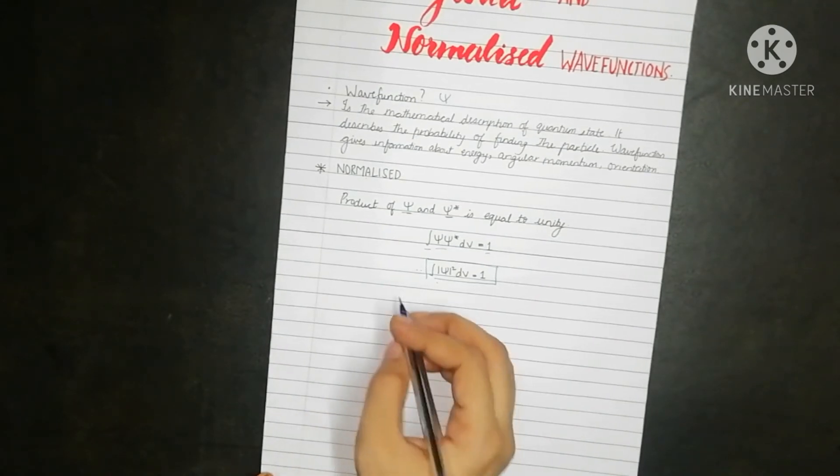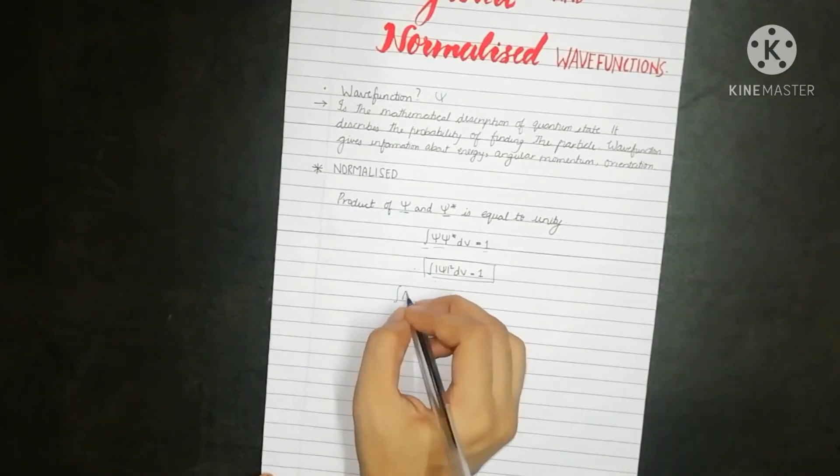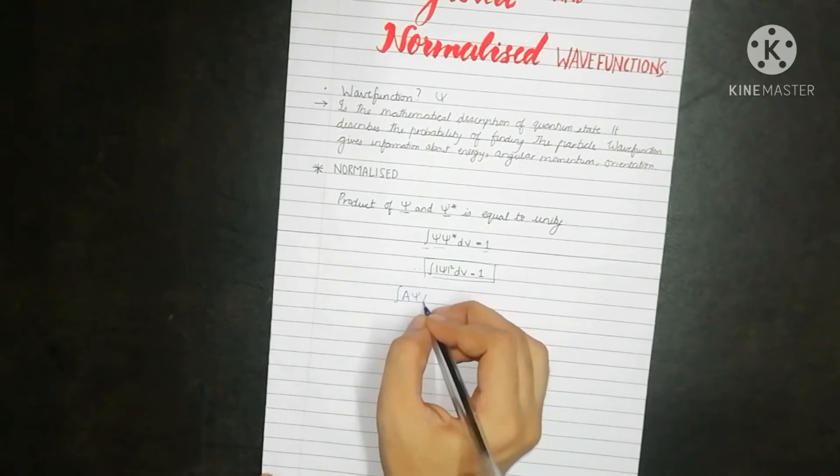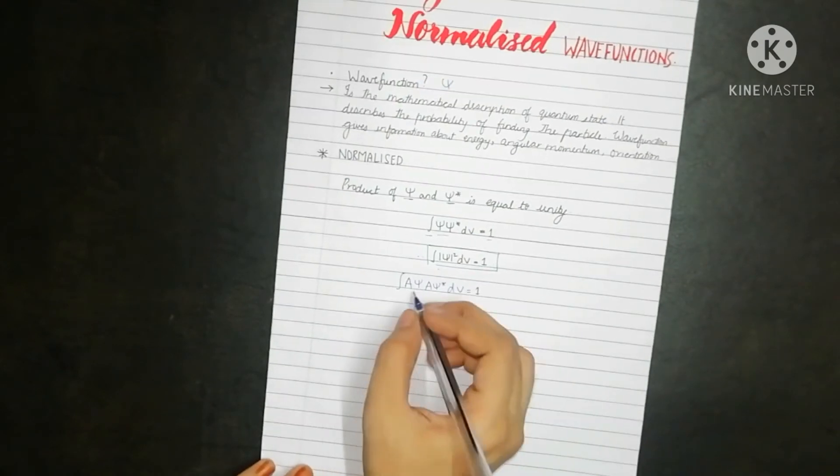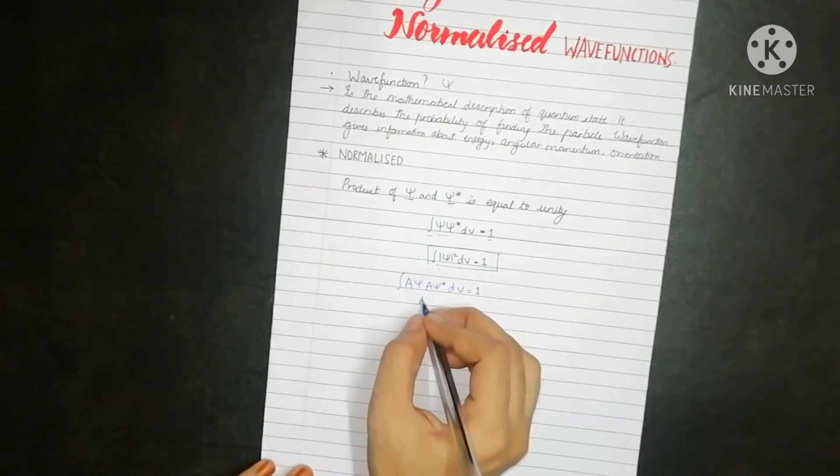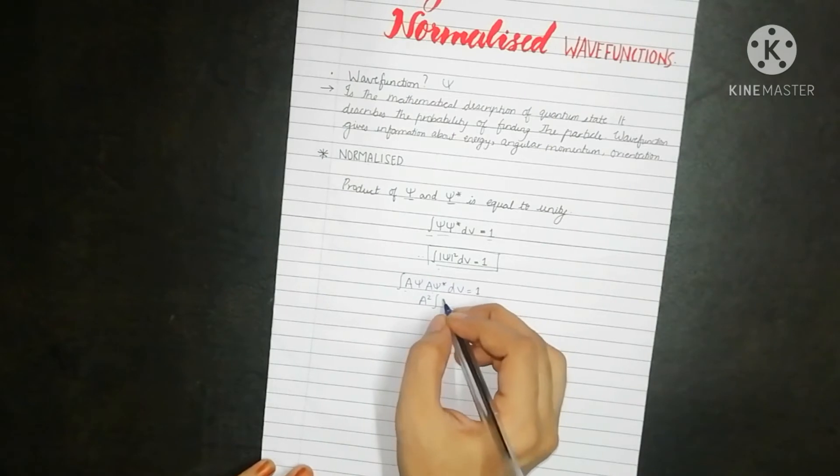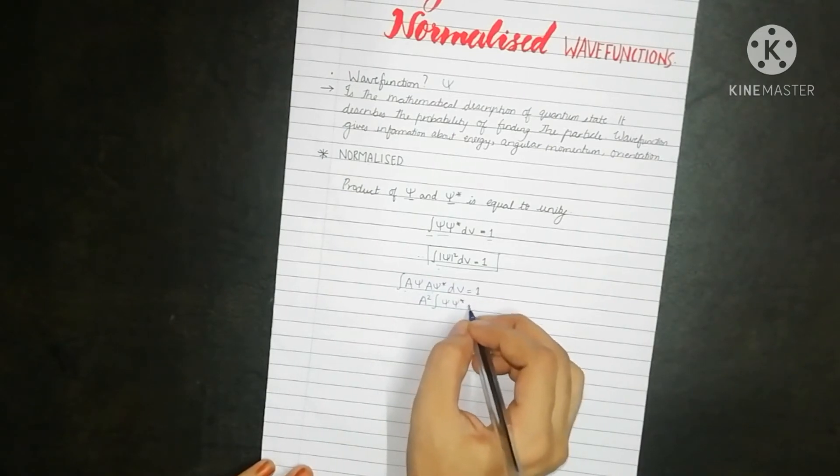This can be written as integration of a psi into a psi star dv is equal to 1. a into a is a square. Taking it outside, we get a square psi into psi star dv is equal to 1.